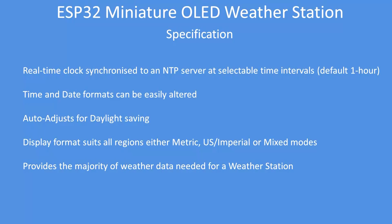The specification: the real-time clock uses an interrupt that runs every second to keep the clock running, but every hour — currently set to every hour, though you can vary that — it gets a synchronization from the network time servers. Date and time formats can be adjusted to anything you like; it auto-adjusts for daylight saving, so you can select a display format that suits pretty much every region in the world, and it provides the majority of weather data needed for a weather station.